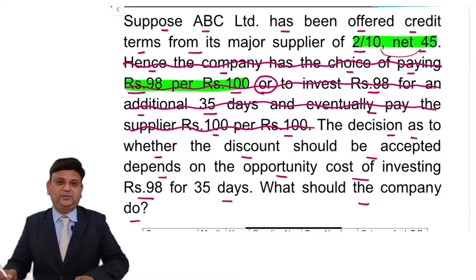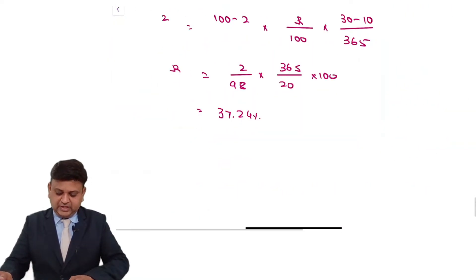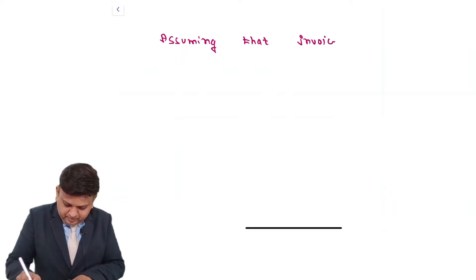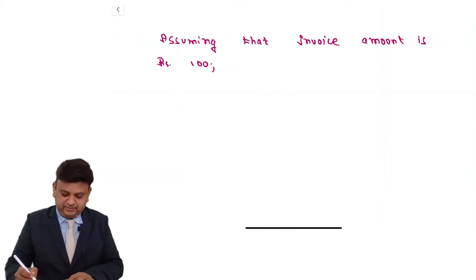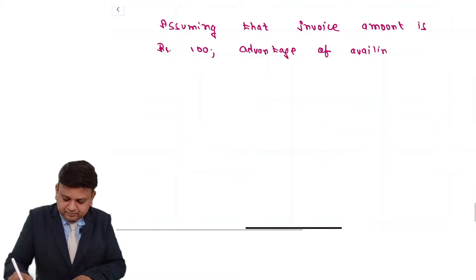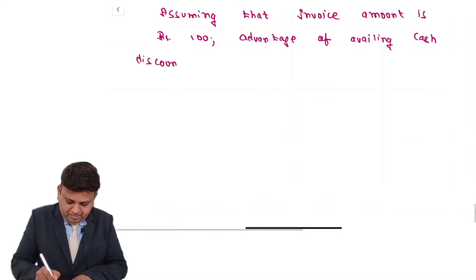So, what should the company do? I request all of you to write an answer. Assuming that invoice amount is Rs. 100, advantage of availing cash discount is calculated.